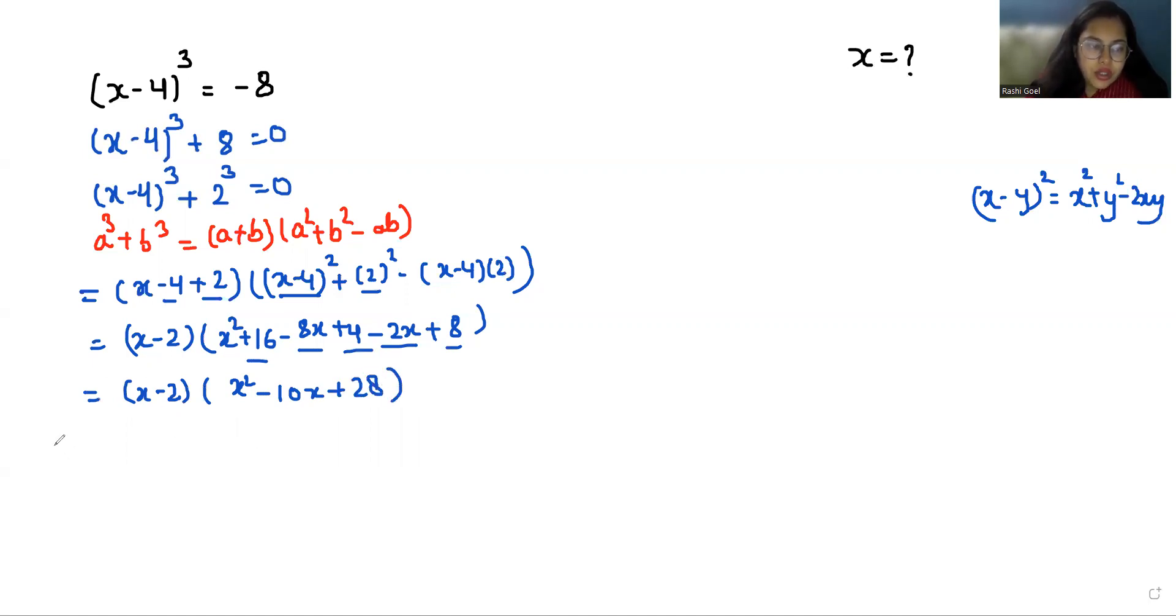So we have two roots. Either x - 2 = 0 or x² - 10x + 28 = 0. From the first equation, the value of x is 2.